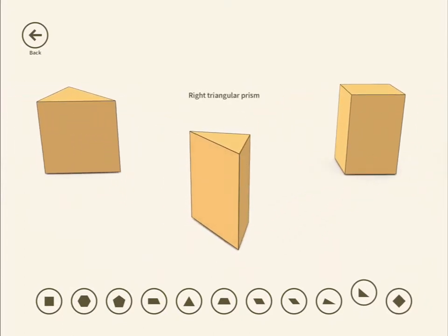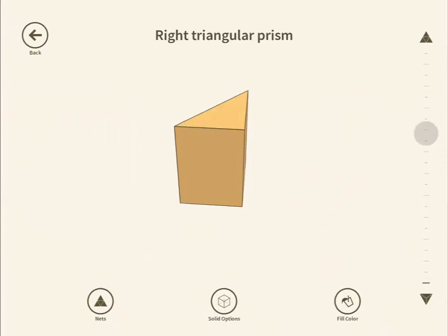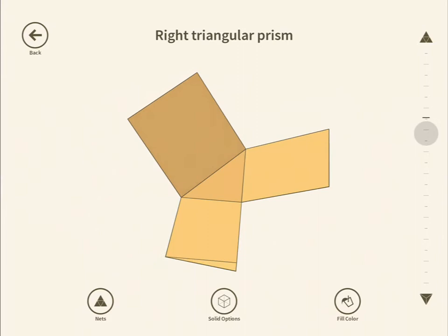Now, if we look at this prism here, we can see that it has the same cross-sectional area throughout, i.e. a right-angled triangle, and we can open it up and get its net.